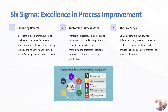The term Six Sigma originated in manufacturing as a means of quality control. Six Sigma quality is achieved when long-term defect levels are below 3.4 defects per million opportunities, or DPMO. The Six Sigma method uses a step-by-step approach called DMAIC — Define, Measure, Analyze, Improve, and Control. Six Sigma is a statistical, data-driven problem solving technique.